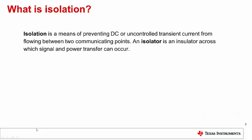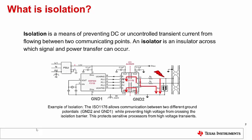What is isolation? Isolation is a means of preventing DC or uncontrolled transient currents from flowing between two communicating points. An isolator is an insulator across which signal and power transfer can occur. In this example, the ISO 1176 allows communication between two different ground potentials, while preventing high voltage from crossing the isolation barrier. This protects sensitive processors from high voltage transients.